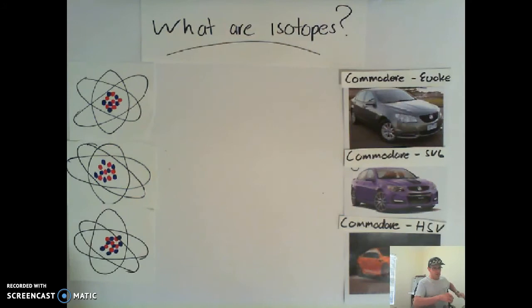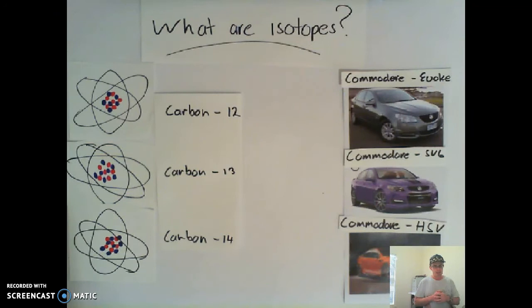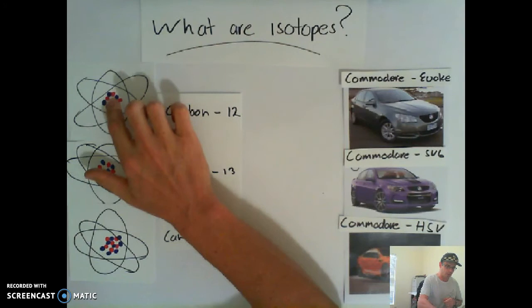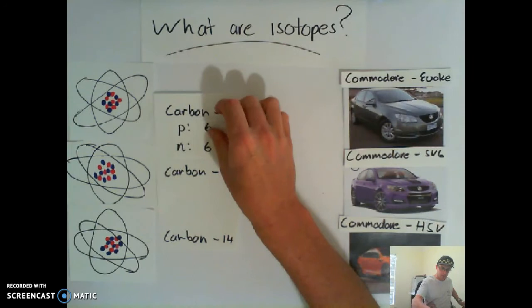So we've got three different versions or three different models of carbon: carbon-12, carbon-13, and carbon-14. Now, if we were to start counting up all of the particles within the nucleus, I'm using the red dots for protons and the blue dots for neutrons. Carbon-12 has six protons and six neutrons. So carbon-12: six protons, six neutrons.